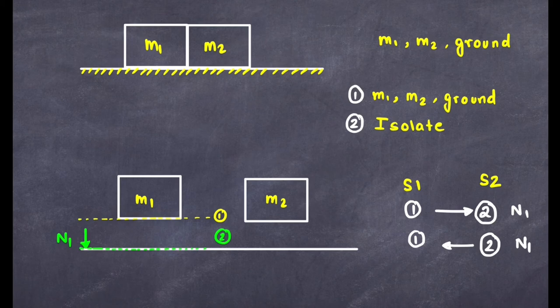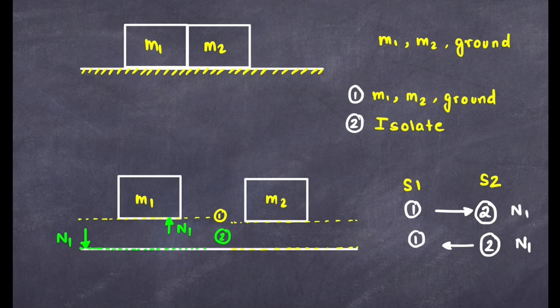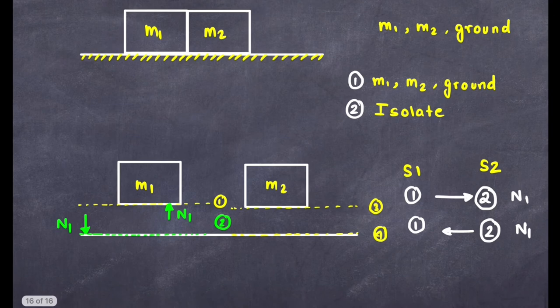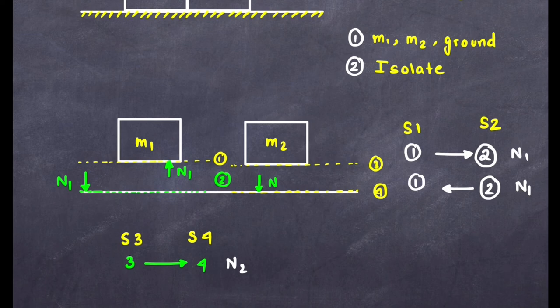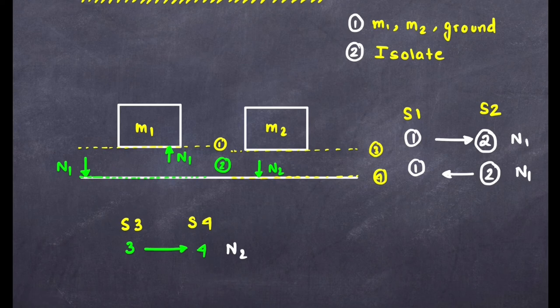Also, the lowermost surface of m2 (surface 3) is in contact with the uppermost surface of the ground (surface 4). Surface 3 exerts N2 towards surface 4, and by Newton's third law, surface 4 exerts N2 back towards surface 3 in the opposite direction.